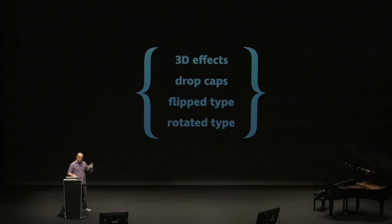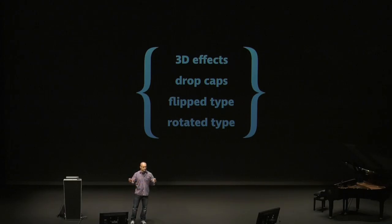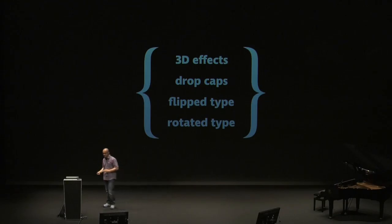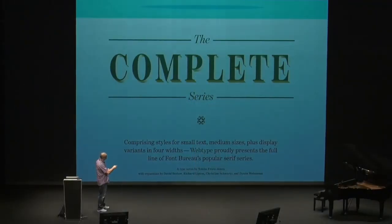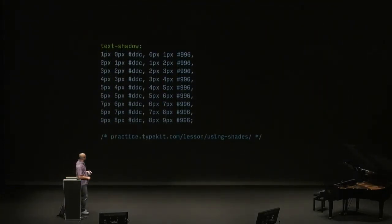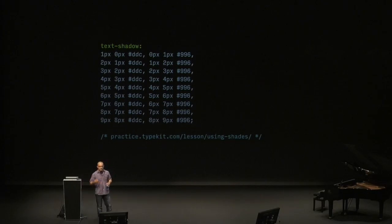There are a couple of things I want to show you: how to achieve 3D effects, drop caps, flip type, and rotated type. Whenever you try any experiment, always keep in mind that it has to be responsive — it has to work on mobile, tablet, desktop, refrigerator, or your car. To achieve a 3D effect we have one shade here and another shade there. We use the text-shadow property. There's a great lesson about text shadows — there are painter's shadows, which are lower left, because when you paint letters on signage you spend less color.